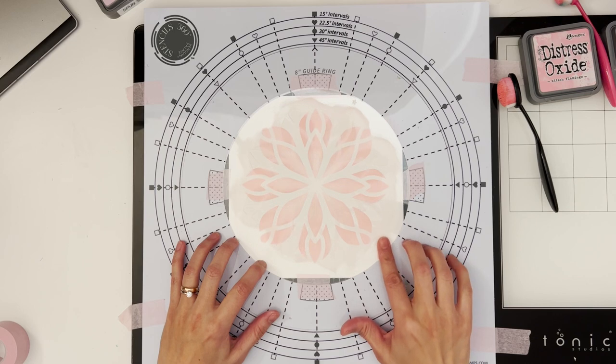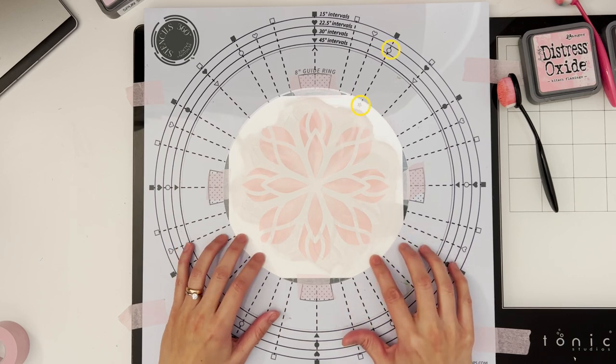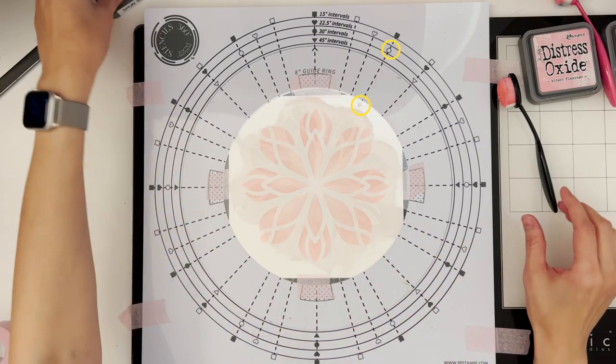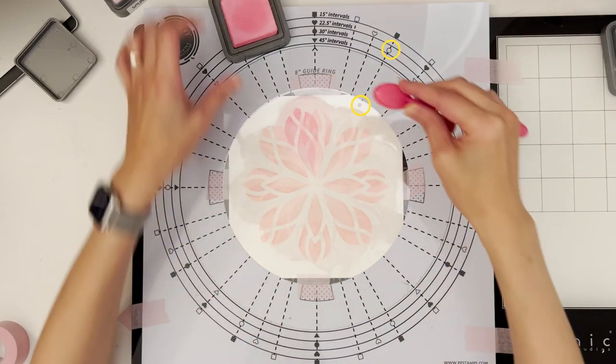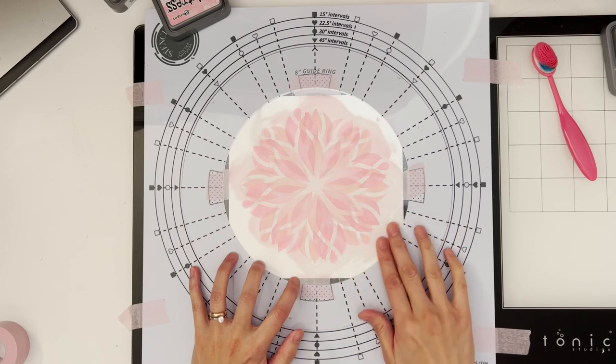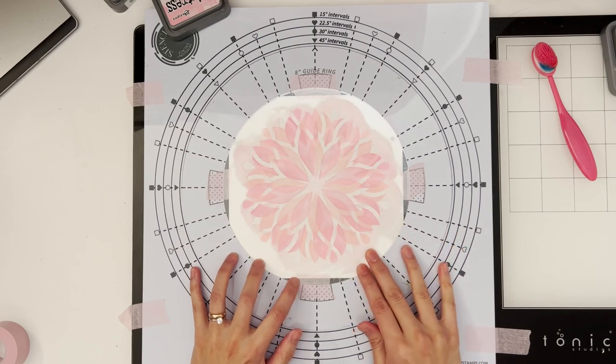So I have just finished inking with sponge sugar and I'm going to turn the stencil at 30 degrees, meaning I'm going to align the marker to the next circle on the base. Now onto the final round. I'm using worn lipstick this time.